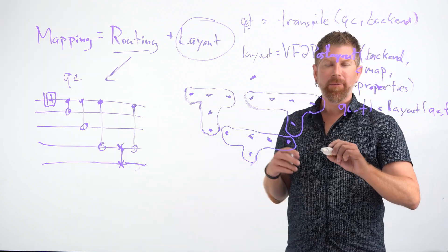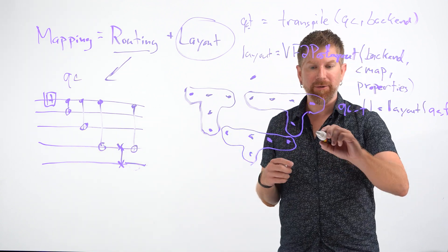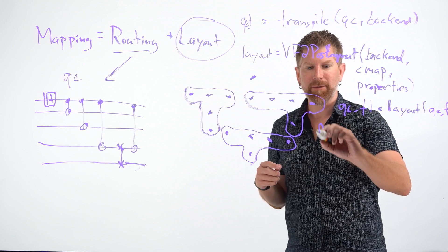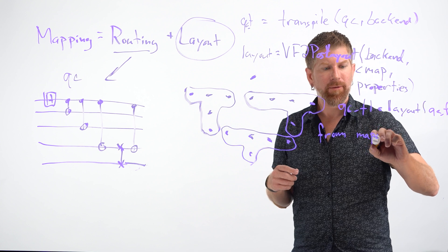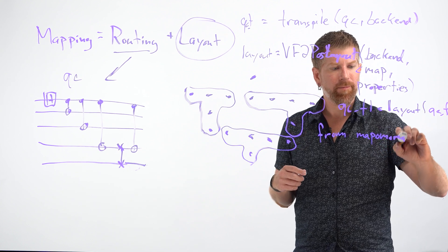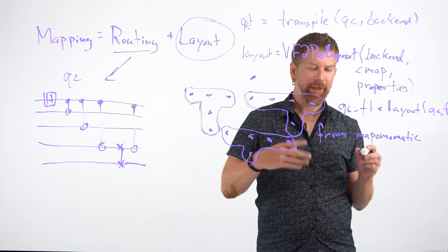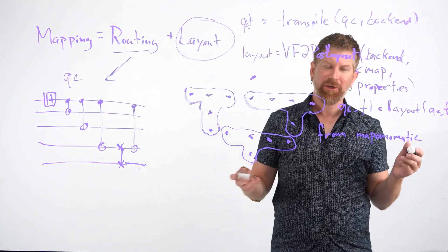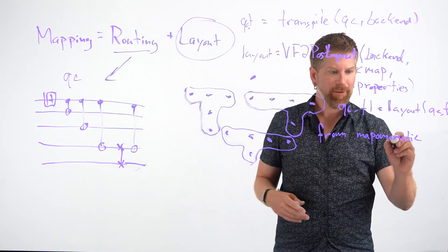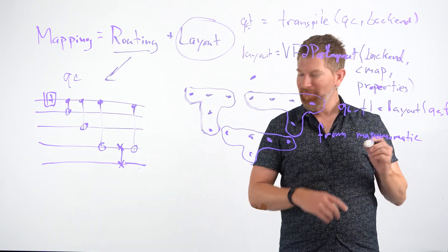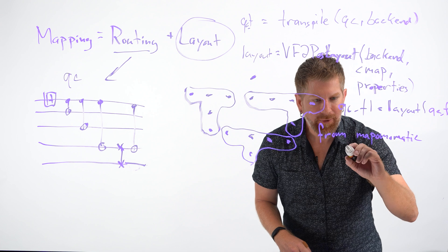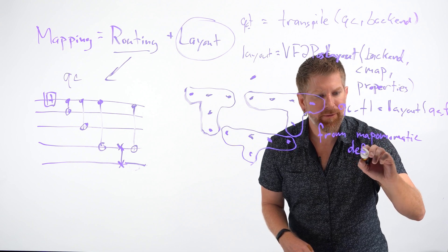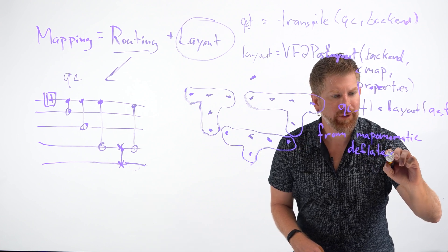Alternatively, we can use another library that was built on top of Qiskit called Map-O-Matic. Map-O-Matic is an extension of Qiskit that can be installed just with pip install Map-O-Matic. And the three things we need to do, first of all, are we need to deflate the circuit.